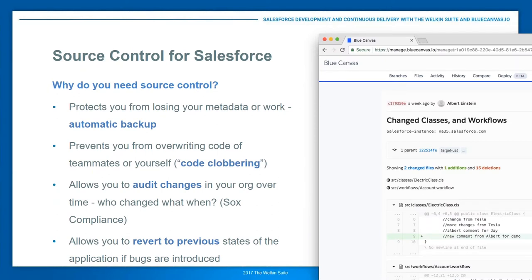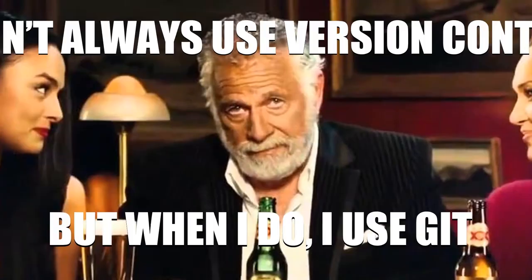The two root causes of these challenges are: lack of source control, and change sets being manual. Source control is key for allowing teams to collaborate safely and roll back. It prevents you from losing work through automatic backup, prevents you from overriding someone else's code, and handles merging. Many of our users use us for SOX compliance — Salesforce's audit trail doesn't give you a detailed view of what changed and who changed it. Source control solves that.